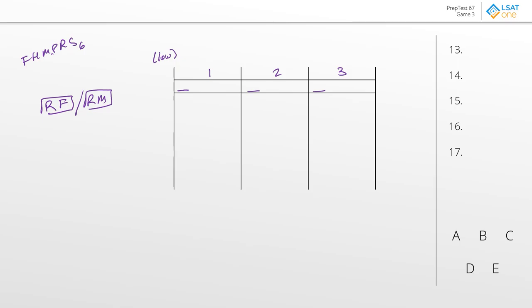We are told that F has to be in a lower number than both M and P, so F is before both M and P. Next, we're told that S is in a lower number than P, so we already have P on the board. It's worth noting that we've got F and M kind of in play here.